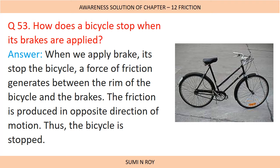Next question: How does a bicycle stop when brakes are applied? When we apply the brake, a force of friction is generated between the rim of the bicycle and the brakes. The friction is produced in the opposite direction of motion, thus the bicycle is stopped. The brake pads create a friction force with the rim, the wheels of the bicycle stop, and then due to friction between the tires and the ground, the tires eventually come to rest.